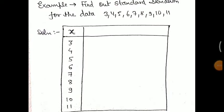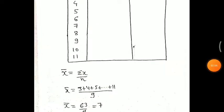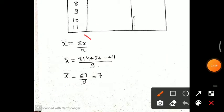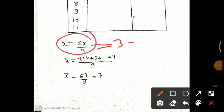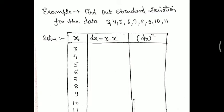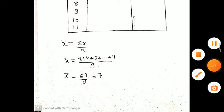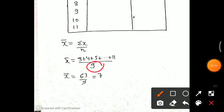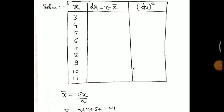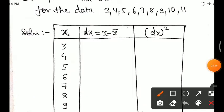Now finding x̄: arithmetic mean equals summation x upon n, that means summing all values — 3 plus 4 plus 5 plus 6, up to 11. There are 9 total values, so n equals 9. The arithmetic mean x̄ equals 7. We put x̄ equals 7 in the table.